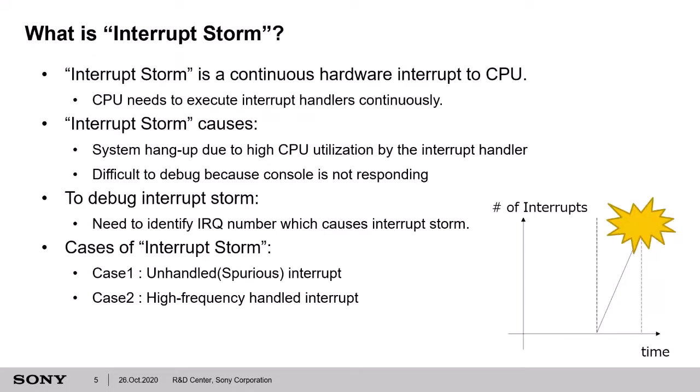At first, I will talk about the background of why I developed this feature. Before explaining my development, I'd like to talk about Interrupt Storm. An Interrupt Storm is a continuous interrupt from hardware to CPU. I think most Linux kernel engineers have seen this problem at least once. When Interrupt Storm occurs, an interrupt handler will be executed by the CPU continuously in a short time, like this figure. Interrupt Storm causes the system to hang up because the interrupt handler will use the CPU continuously, so other tasks can't use the CPU.